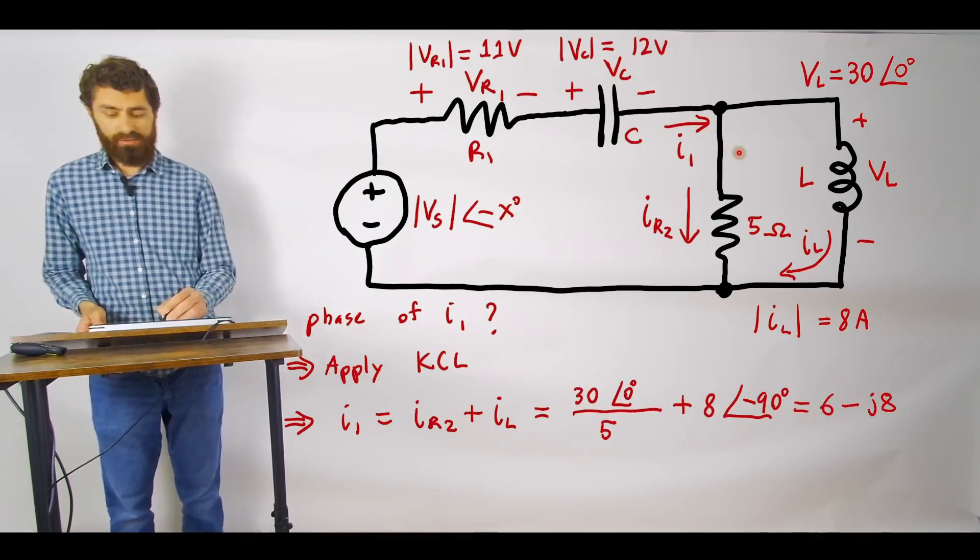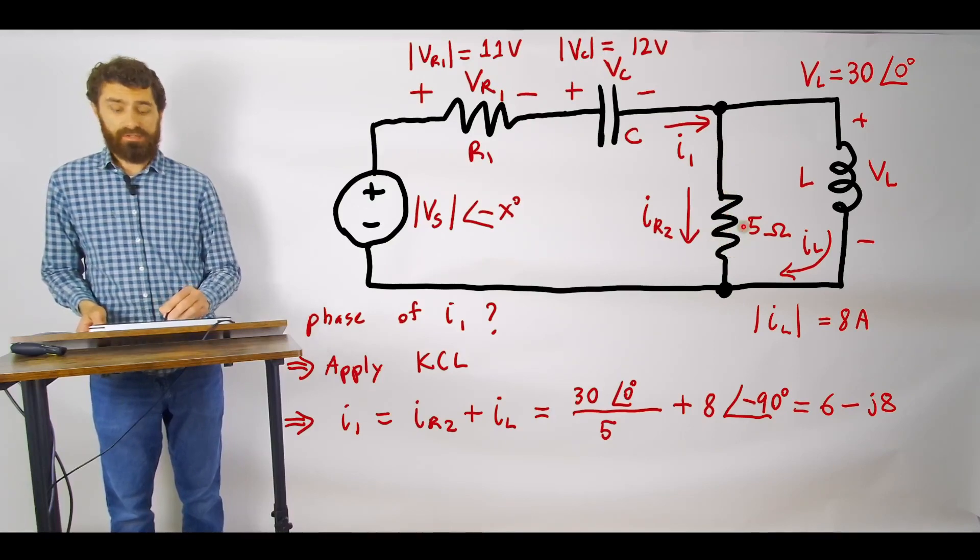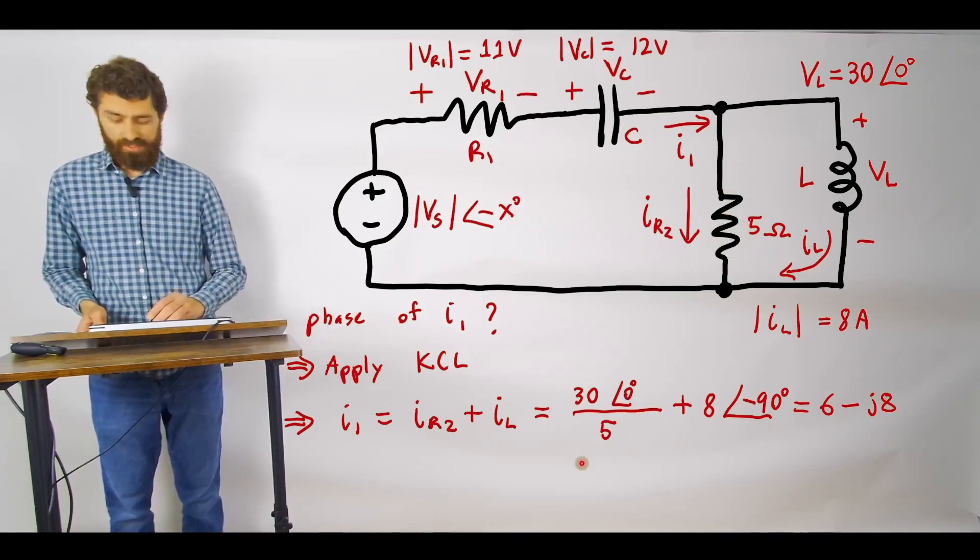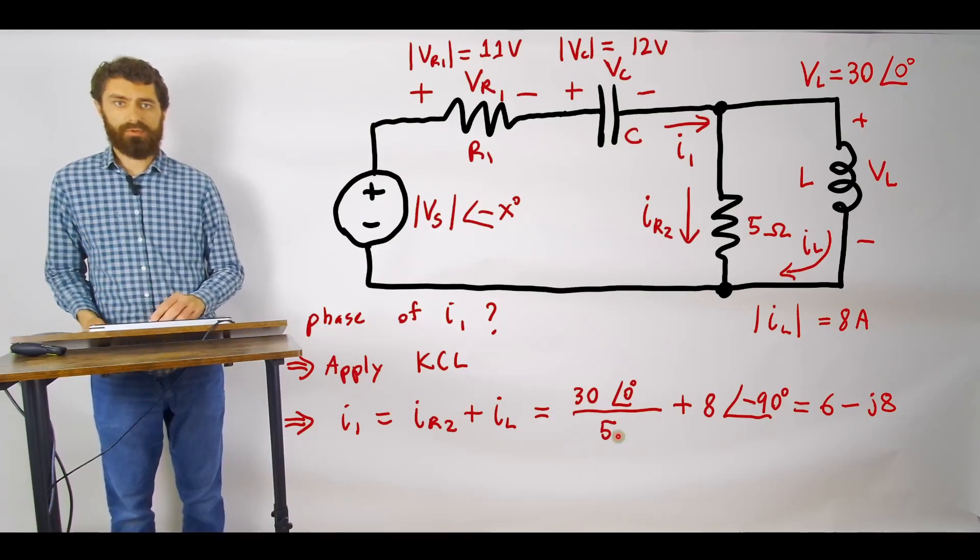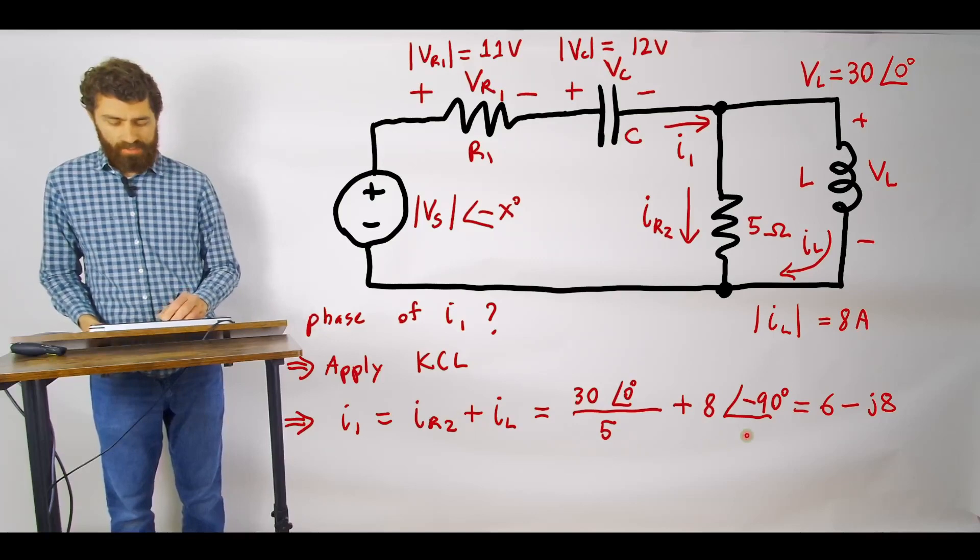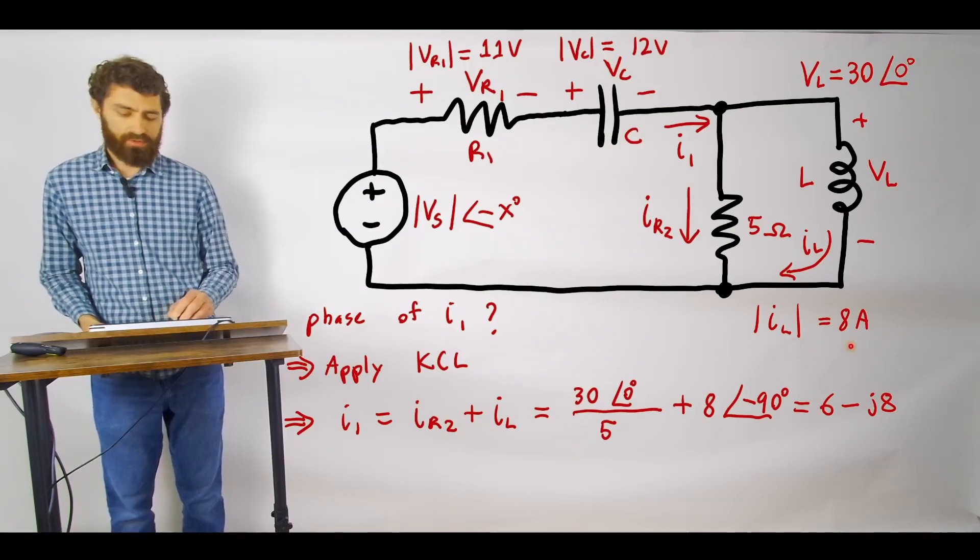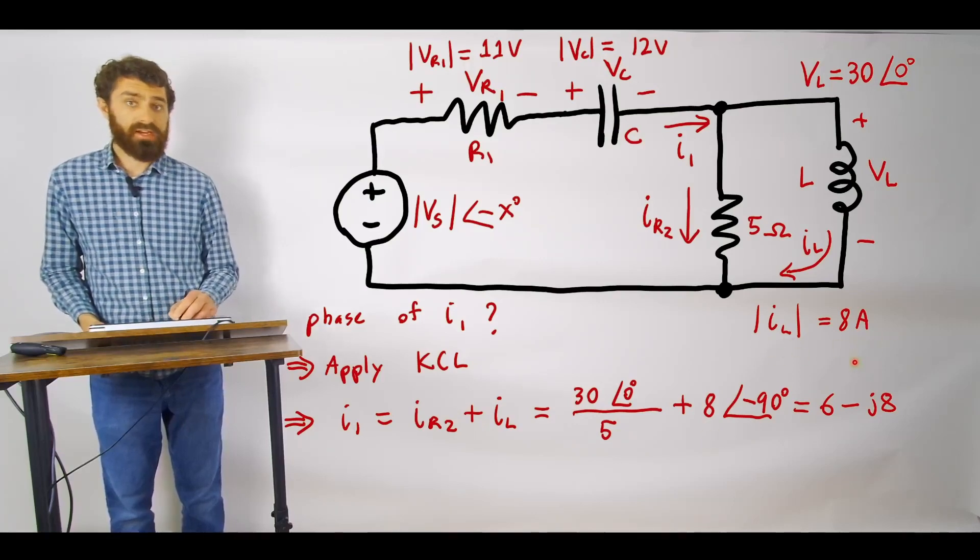Then we'll go ahead and directly plug in our values here. We know that 30 angle 0 degrees is the voltage across the resistor here. Divided by 5 ohms here will give you the current through the resistor.